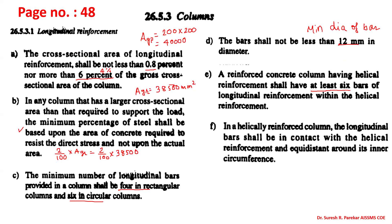A reinforced column having helical reinforcement shall have at least six bars of longitudinal reinforcement. In a helical reinforced column, the longitudinal bars shall be in contact with the helical reinforcement and equidistant — meaning the distance between the main longitudinal reinforcement bars should be equal.